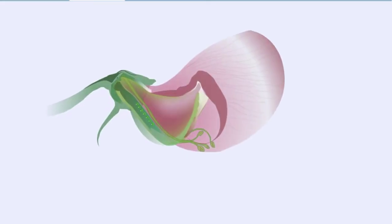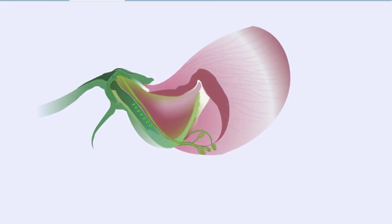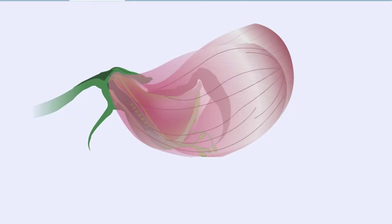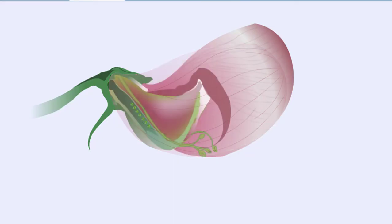Another advantage of using the garden pea was its flower structure. The garden pea is a self-fertilizing plant because the flower is tightly closed at maturity and therefore does not allow foreign pollen from a different plant to fertilize the eggs. This feature means that the sperm and egg that form the seed come from the same parent, and thus the genetic makeup, or genotype, of the parents is identical.